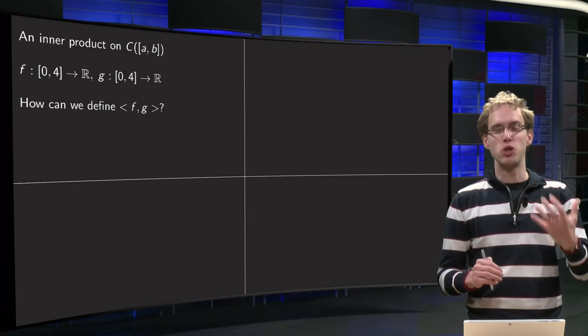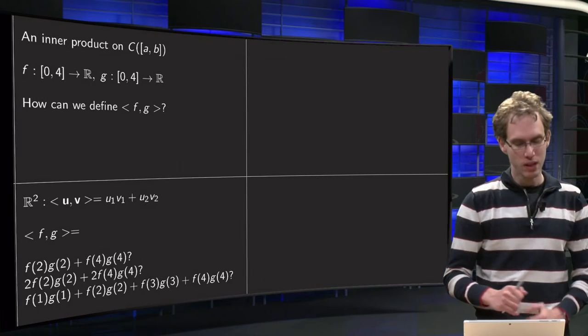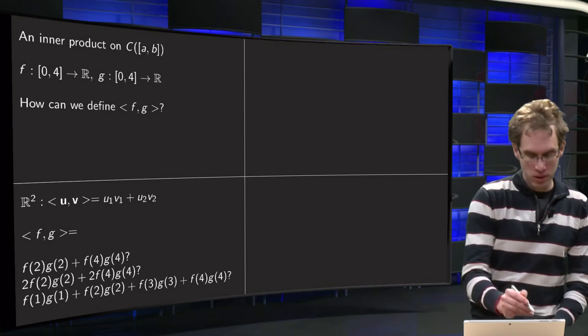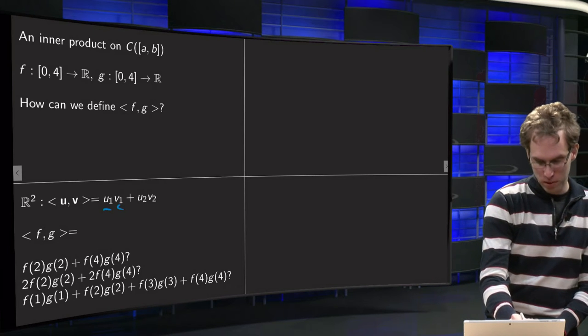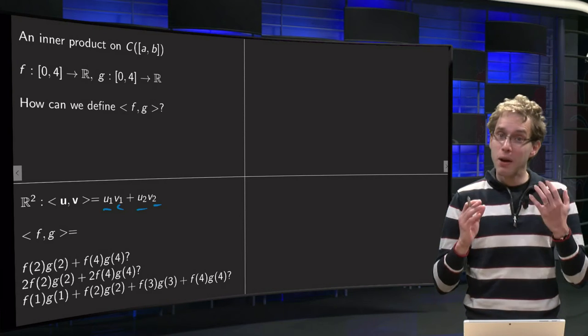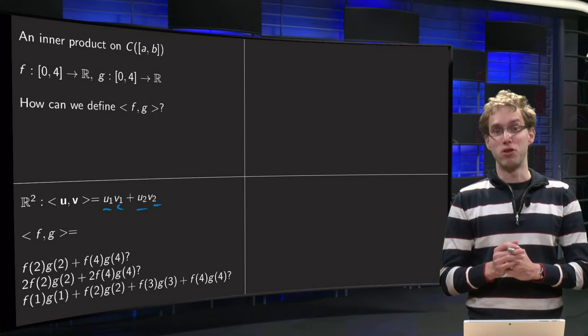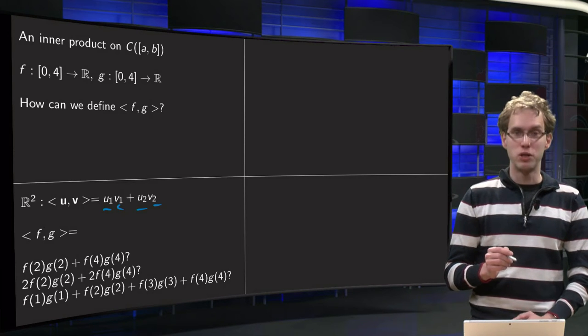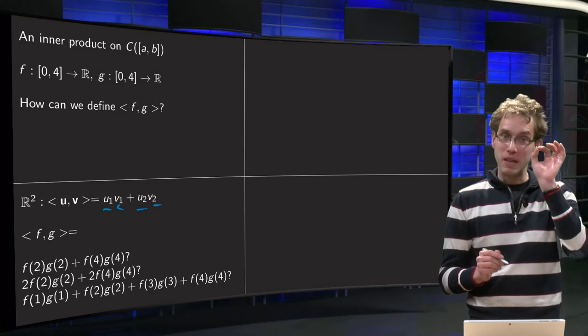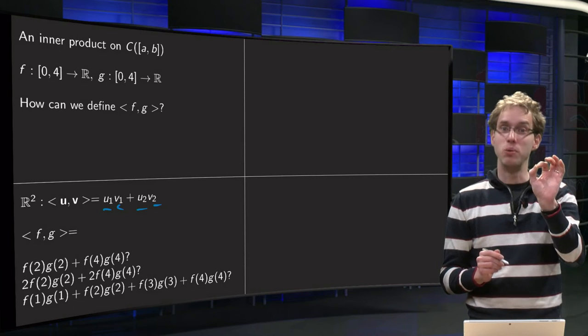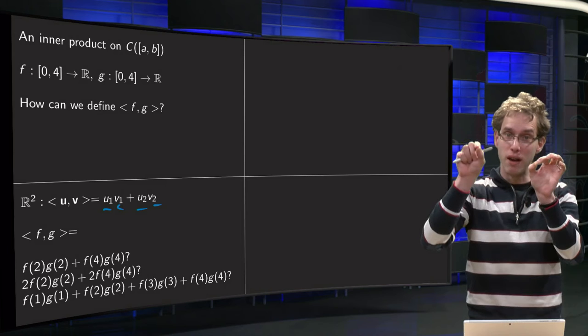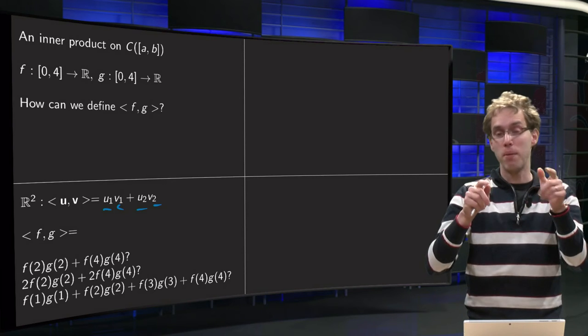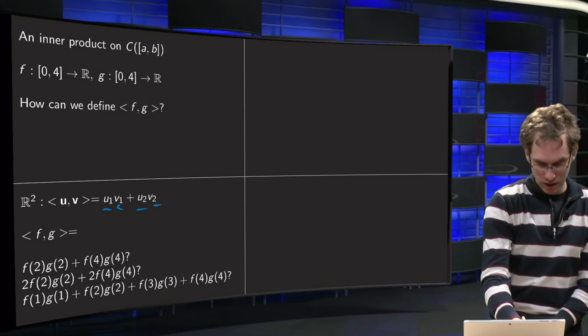So let's take a look at R^2, what could we do? Well, in R^2 we took inner product u1v1 plus u2v2. And we can do something similar of course for our functions. So what can we do? We can say, well, pick the function value of f at 2 and of g at 2, and a function value of f at 4 and g at 4, and multiply and add, like this over here.